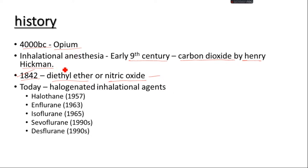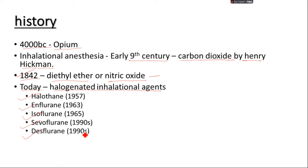And then in today's world, halogenated inhalational agents — which are known as halothane, enflurane, isoflurane, sevoflurane, and desflurane — are most commonly used. In this video we will most commonly talk about isoflurane because it is most commonly used in veterinary settings.